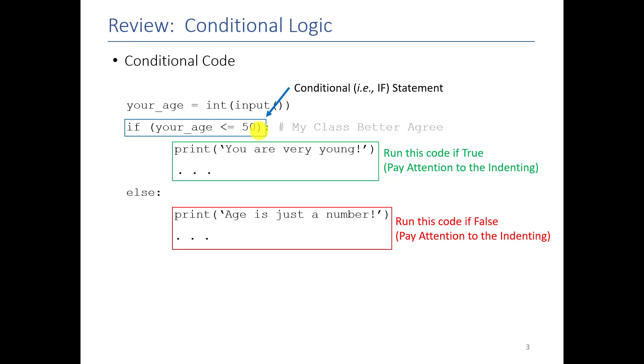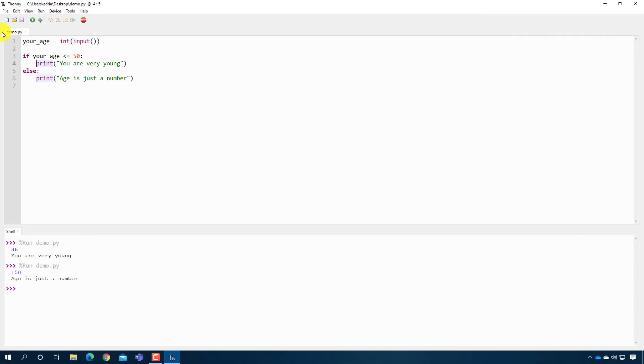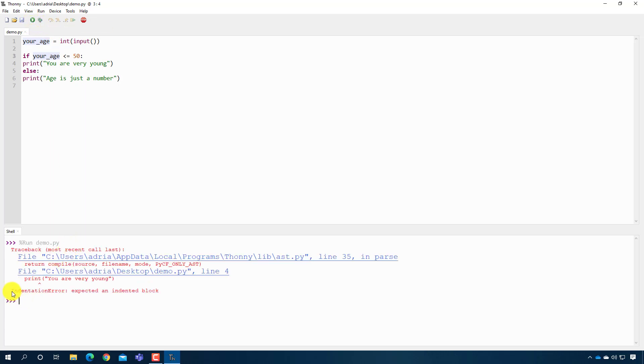One of the things that I see often when students are working on this is they forget to do the indents. I'll show you, for example here's the code that we just had and if you run it I can just type like 36 and I'll say you're very young but now let's say that I mess up the indentation. This is very common and if I was to run this program you'll actually see that I get something called an indentation error and it says I expected an indent block on line four. Basically the rule is that in Python if you do an if statement you have to have at least one line of code inside that if statement otherwise there's no point to having it. The same thing with else. So again now when I run it and I say let's say I'm 80 years old and press enter, age is just a number.